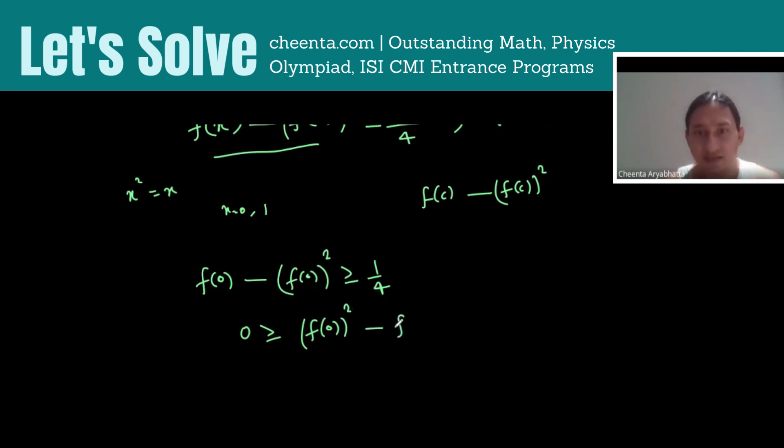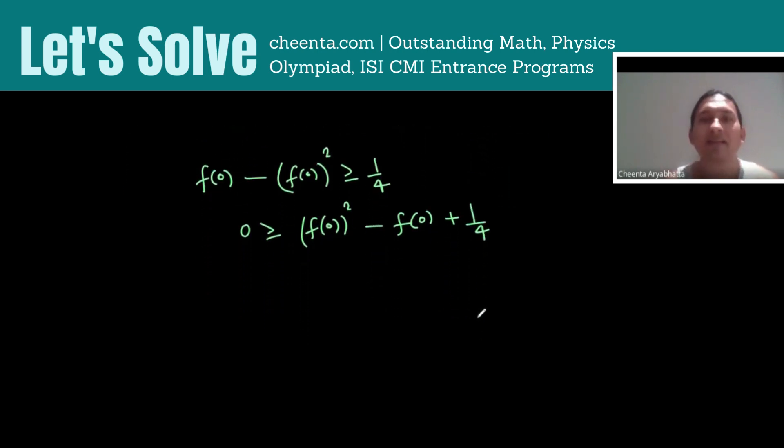Now let's manipulate the right-hand side a bit more. This is (f(0))² - 2·f(0)·(1/2) + (1/2)².